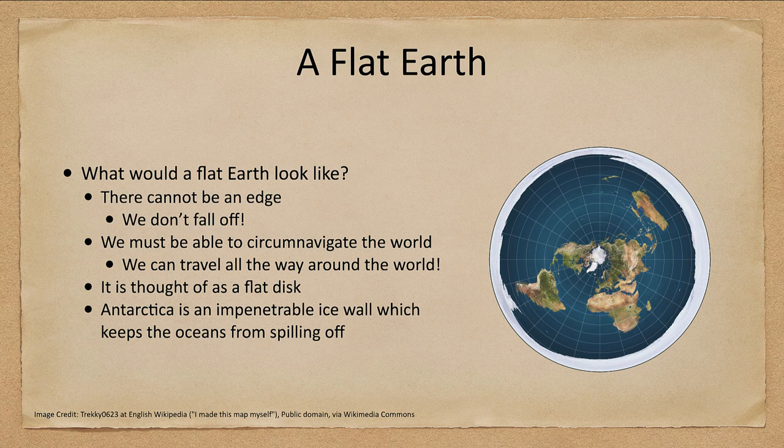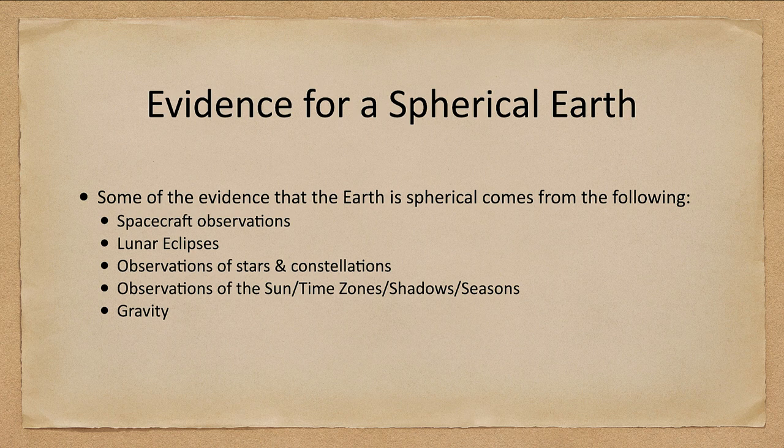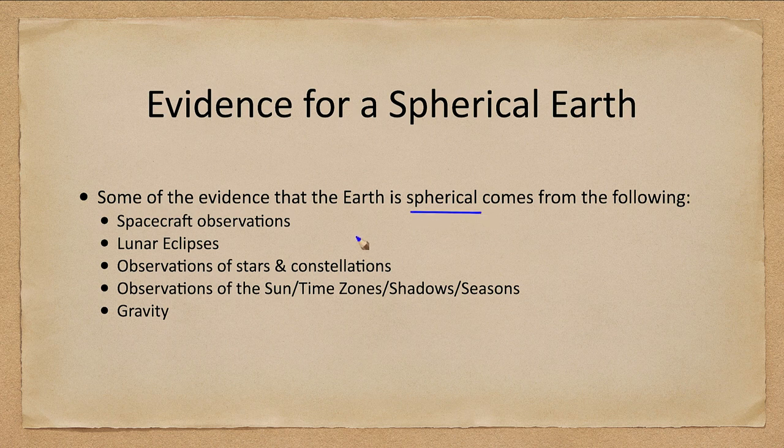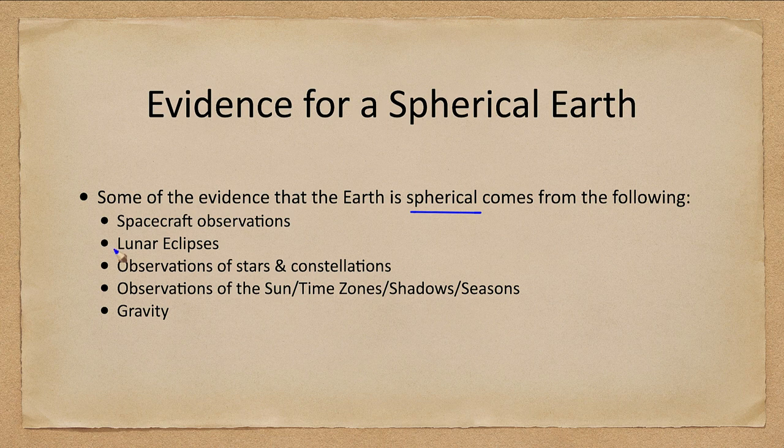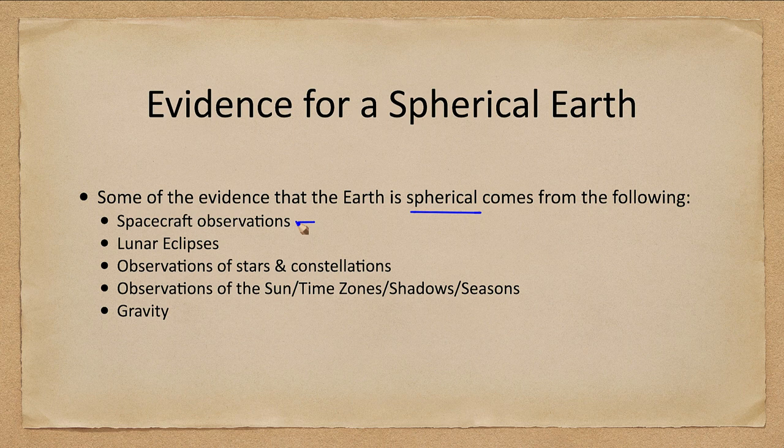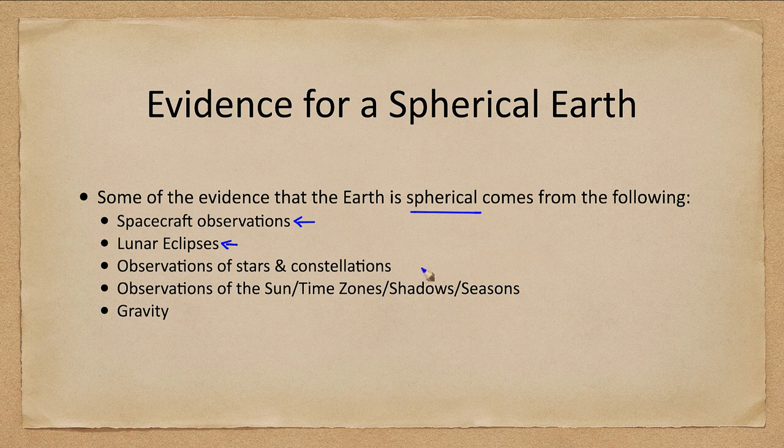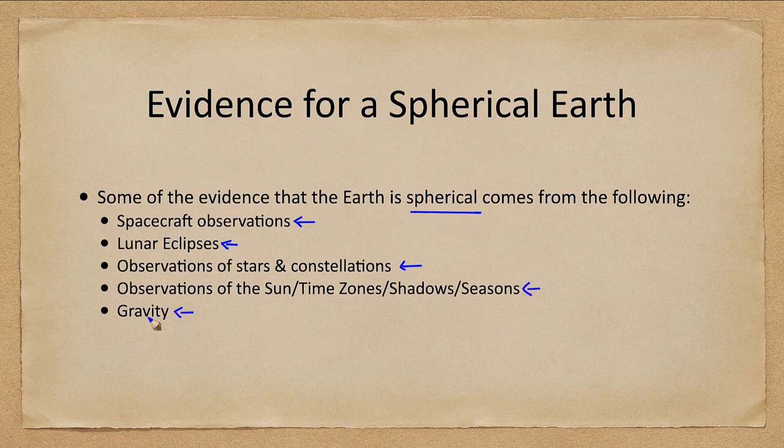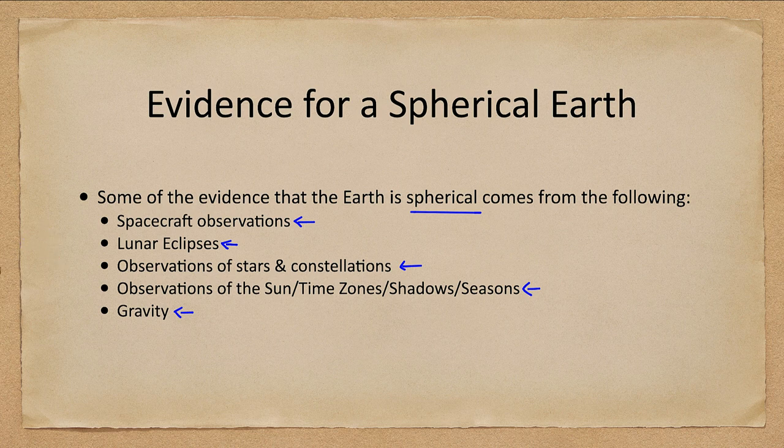Now, what is the evidence for a spherical Earth? Well, we've already talked about this a little bit. We gave ideas that even the ancient Greeks knew that the Earth was spherical. So we're going to look at a couple things here, and this is not a complete list. We have observations from spacecraft, observations of lunar eclipses over the centuries, observations of the stars and constellations, looking at things like the seasons and the sun, and gravity. How does gravity work in a flat Earth? Let's look at each of these briefly in turn.